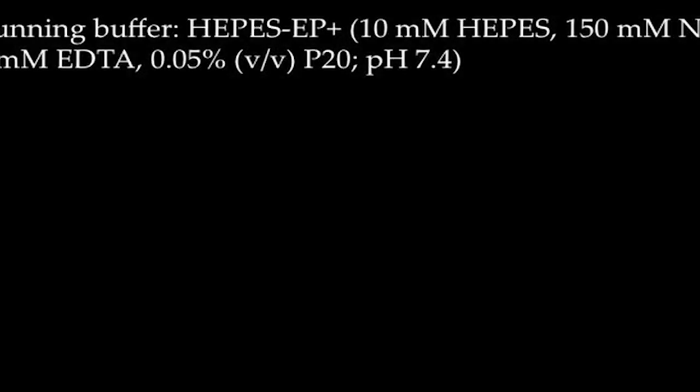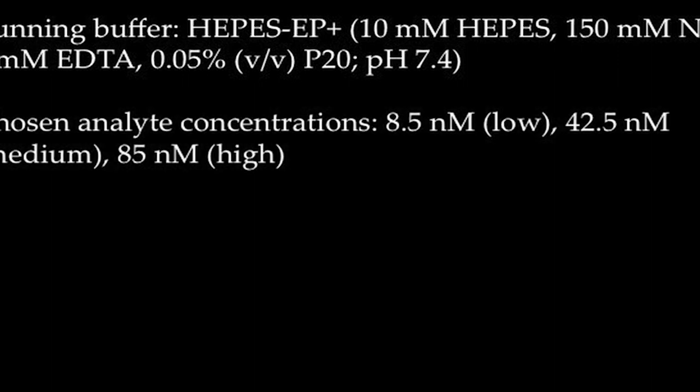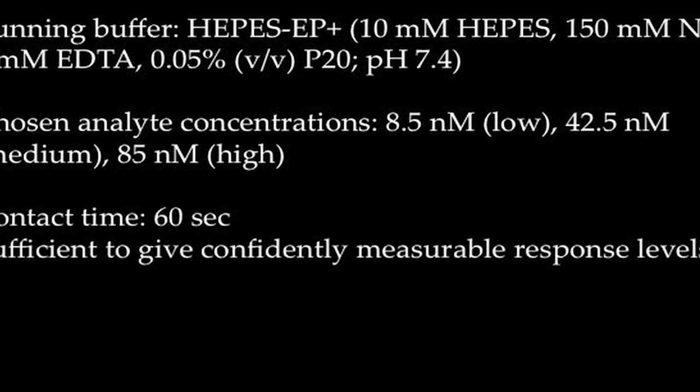In today's binding experimental setup, we will be using HEPIS-EP-plus as the running buffer. We will be preparing three different concentrations of beta-2-microglobulin protein, which are 8.5 nanomolar, 42.5 nanomolar and 85 nanomolar for evaluating its binding with the antibody, having 8.5 nanomolar concentration in duplicates. These three concentrations will be referred to as low, medium and high. Contact times between the sample and the sensor surface should be sufficient to give confidently measurable response levels without compromising screening throughput.